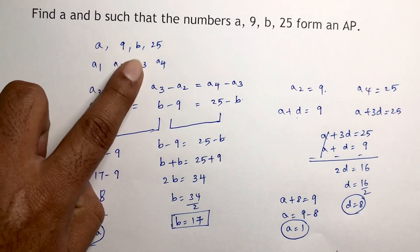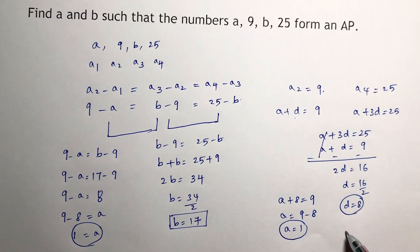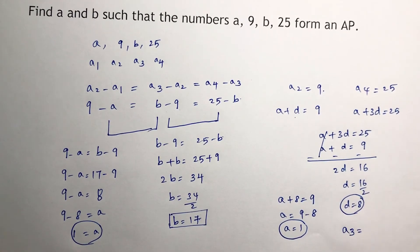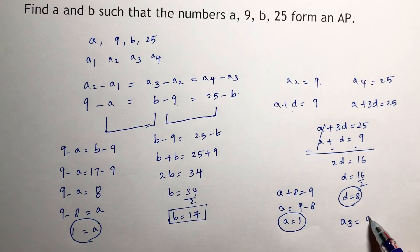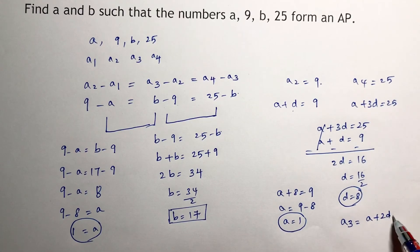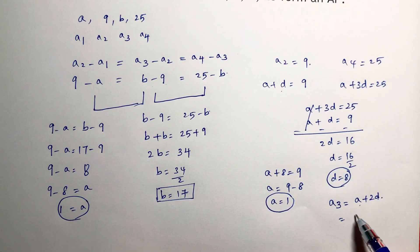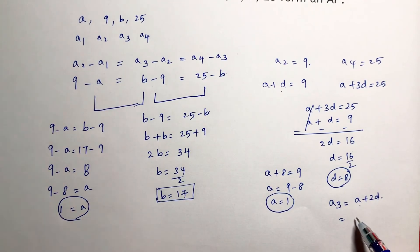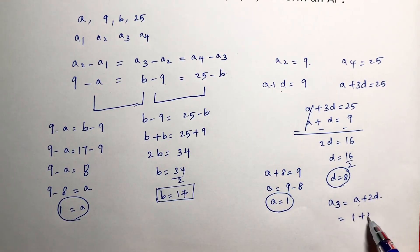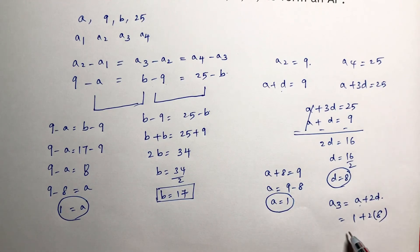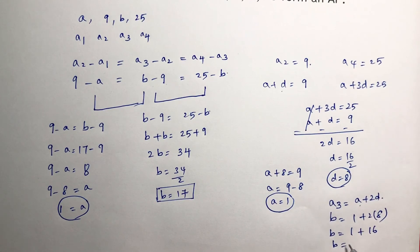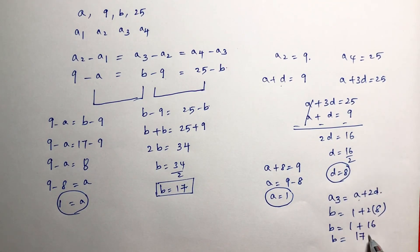b is in place of a3, so I need to calculate a3. a3 is a plus 2d, which is 1 plus 2 into 8, equals 1 plus 16, which is 17. So a3 is b, therefore the value of b is 17.